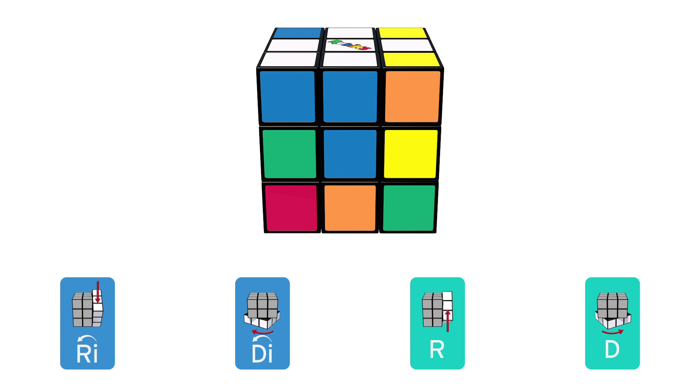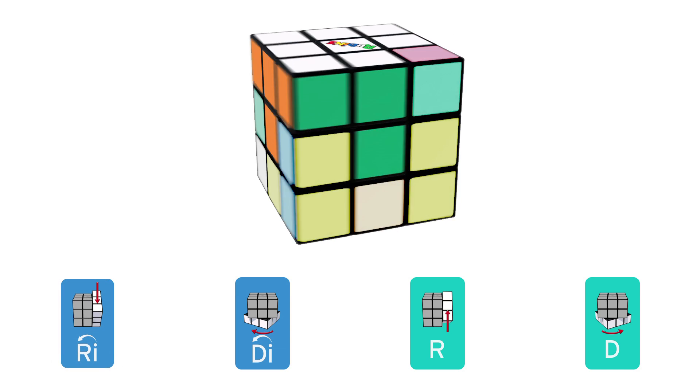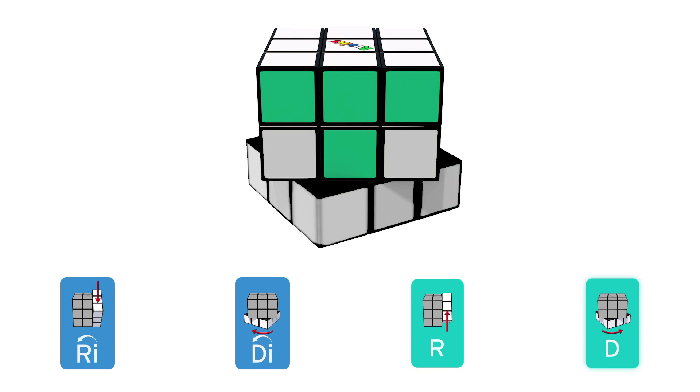Now, find the next white corner and repeat those steps until they're all where they're supposed to be. We've sped it up for demonstration purposes only, but keep going with right inverted, down inverted, right down.